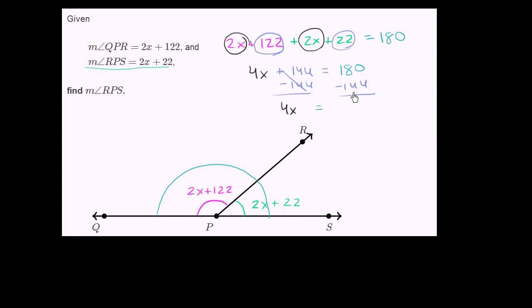if we were subtracting 140, we would have 40 left. And then we have to subtract another 4, so it's going to be 36. Divide both sides by 4, and we get x is equal to 9.